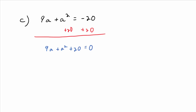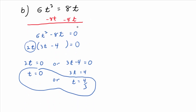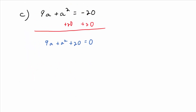Don't forget the equals zero. Up here in that last problem, don't forget that equals zero when you get everything on one side, zero on the other. Don't forget the equals zero here as well. How should I reorder the left side? It's a trinomial — you want descending powers of a. So a squared plus 9a plus 20 equals zero.